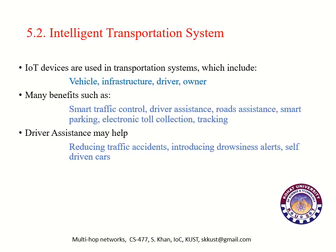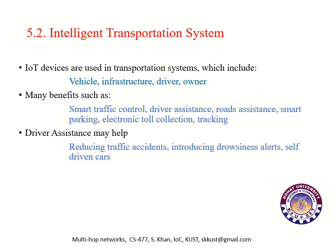Intelligent Transportation Systems: IoT devices are used in intelligent transportation systems. These devices may provide information about the vehicle, infrastructure, drivers, and owners. Intelligent transportation systems provide many benefits such as smart traffic control, driver assistance, road assistance, smart parking, electronic toll collection, and tracking of vehicles. Driver assistance may help reduce traffic accidents, by introducing drowsiness alerts and enabling self-driven cars.